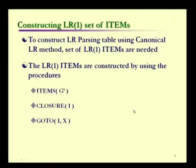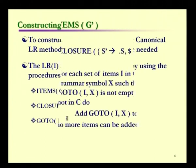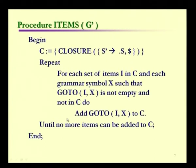This is called an LR(1) item as we have exactly one lookahead. To construct the LR(1) items, we have three procedures: items of the augmented grammar G', closure of I (where I is a set of items), and goto(I, X) where I is a state and X is a grammar symbol.